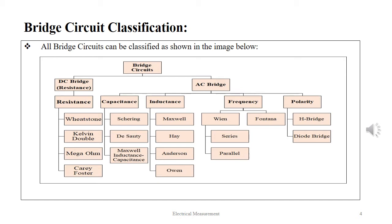The inductance bridges are of four types: Maxwell, Hay, Anderson, and Owen. The frequency bridges are further classified into Wien bridge and Fontana bridge. The Wien bridge can be of series type or parallel type. The polarity bridges are of two types: the H-bridge and the diode bridge.